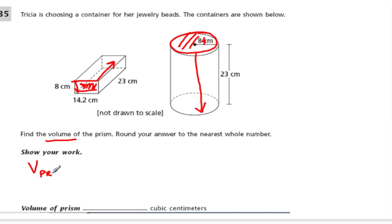So we're going to show our work. The volume of the prism, you can write it like this, V sub prism, is 8 centimeters times 14.2 centimeters times 23 centimeters. Now, they told us to round, so that means we wait until we have an answer here to round.